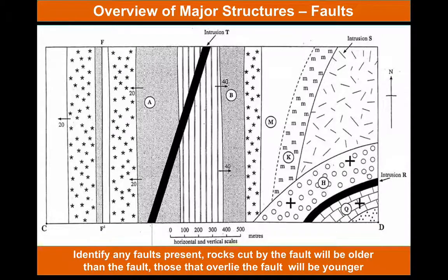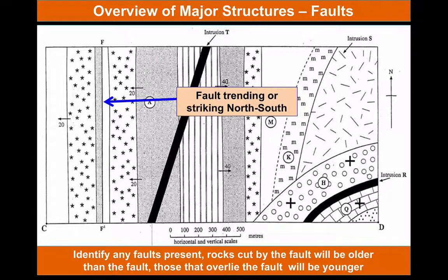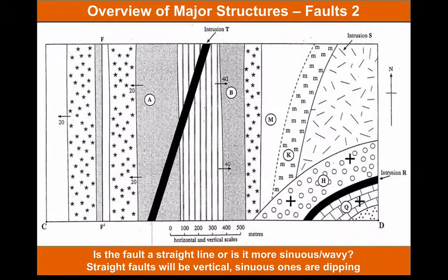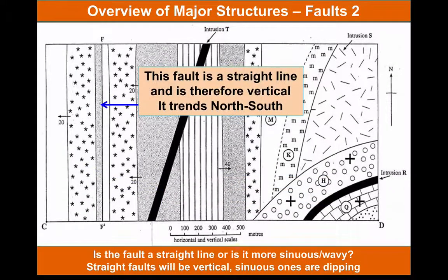We also look for faults. Faults are usually quite obvious because we see some displacement in the rocks — we see different types of rocks either side, or we see the same sequence moved. On this map it's really subtle. This fault is trending, striking north–south. We can also see there's a repetition in the beds, but it's not the same as a fold because there's no symmetry in that repetition. This particular fault is a dead straight line, which indicates a vertical structure; if it's more wavy or sinuous, the fault is inclined. It's hard to tell which way that's happening on a geological map — very often there'll be clues given to you in the exam paper. If you annotate your map as you go, cross-sections become more straightforward.